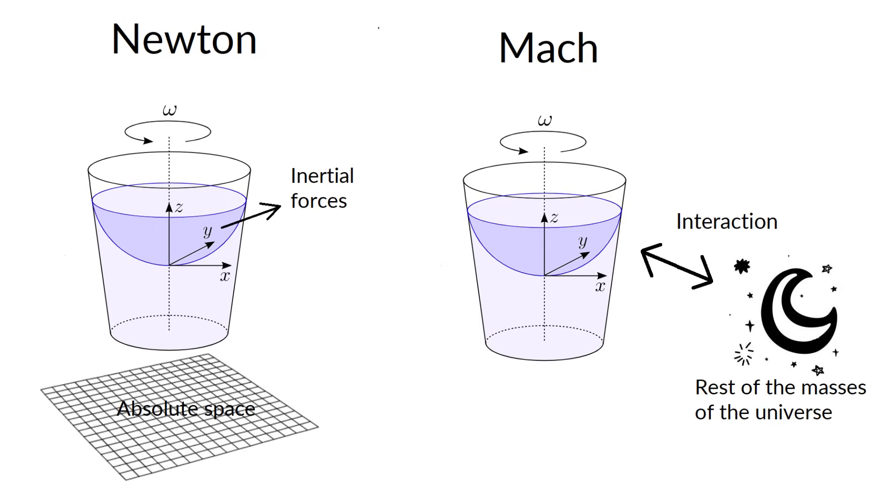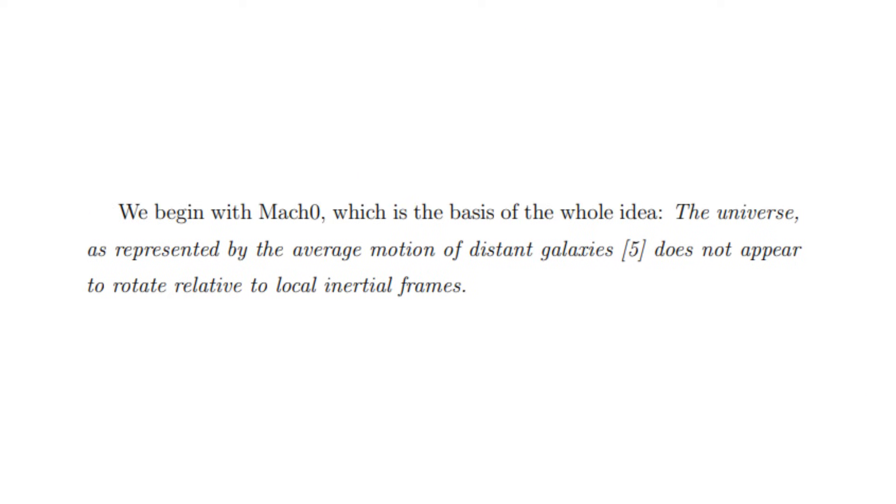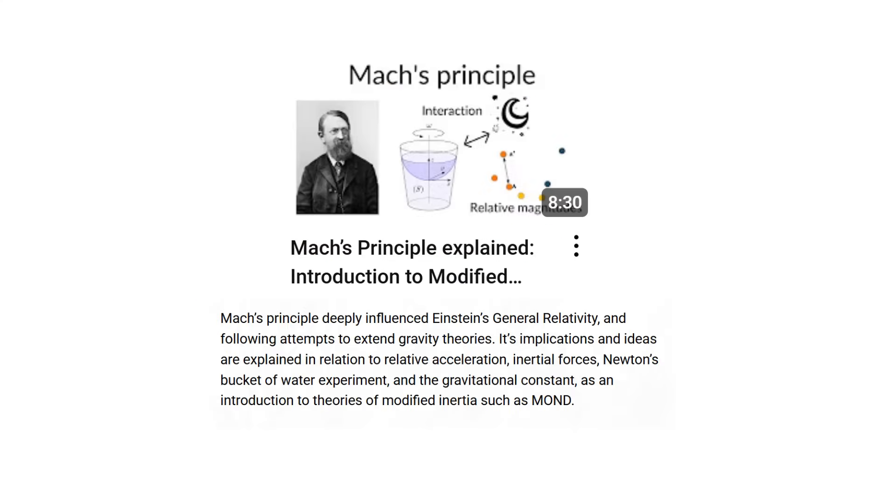But Ernst Mach argued that these inertial forces appear due to accelerated motion with respect to the rest of the universe, not with respect to an absolute and unobservable space or spacetime absent of physical properties. This would be equivalent to redefining inertial frames as those not accelerating with respect to the rest of the universe. We explained Mach's ideas and their implications in our previous video, Mach's Principle Explained.